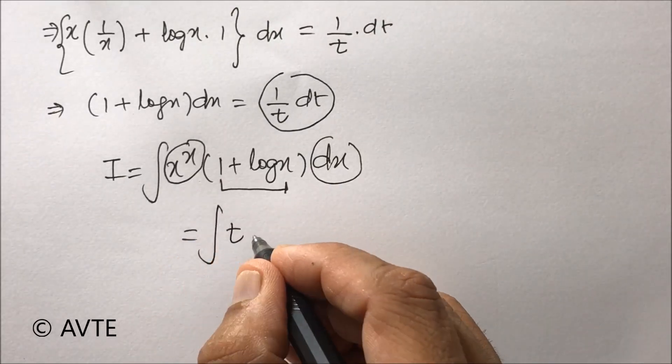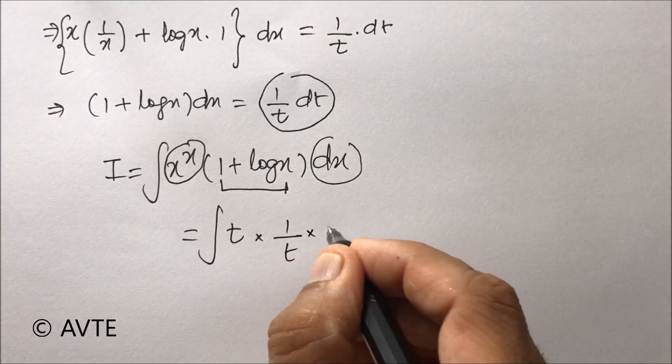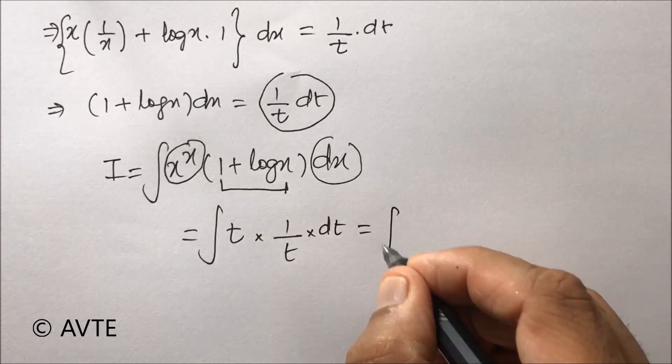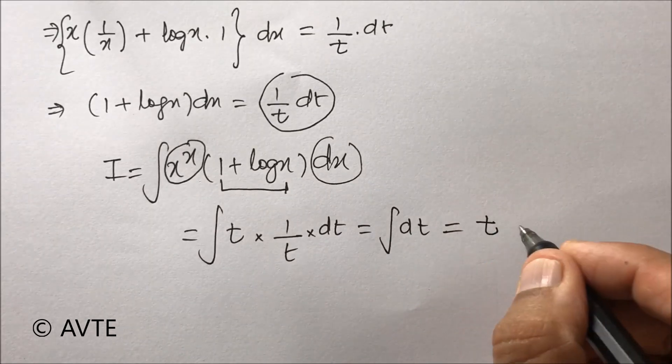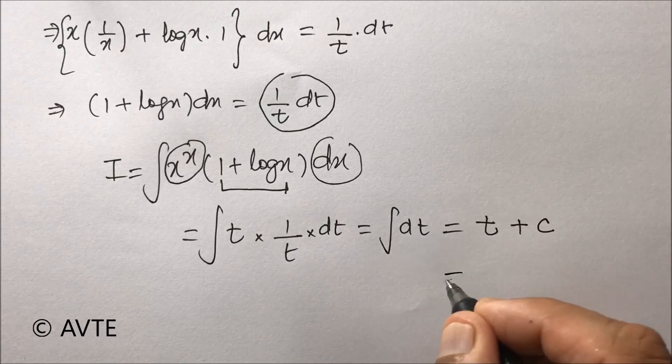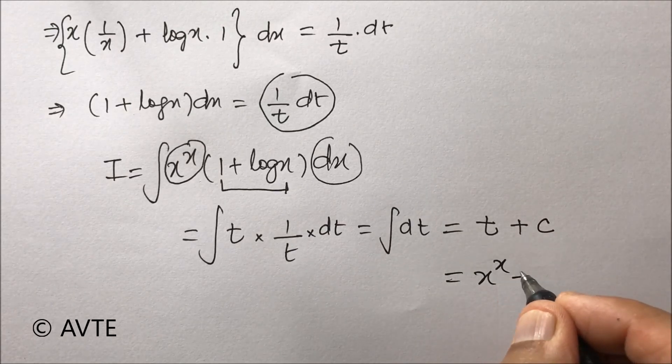So this is t times 1/t times dt. We are left with the integration of dt only. So the integration is t + c, and t is x^x, giving us x^x + c.